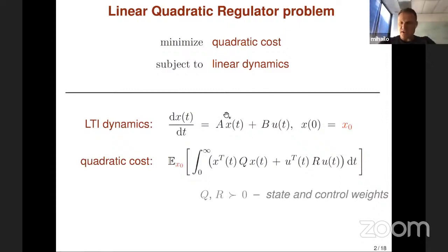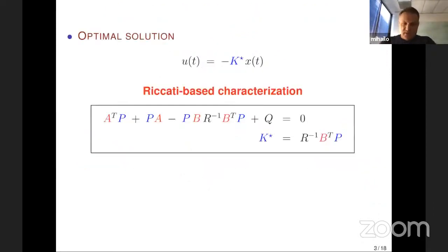Minimization is done over all state and control trajectories. The globally optimal solution is given by this linear state feedback policy, which tells you that at every time instant you form control action by acting on the vector of available state measurements with a fixed matrix K.